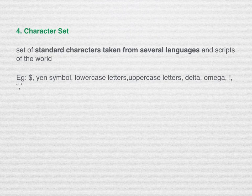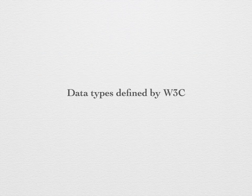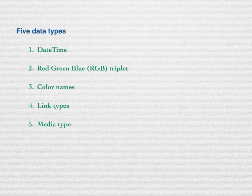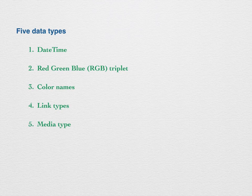These are the data types defined by RFC and IANA. Next are the data types defined by the W3C — the World Wide Web Consortium. There are five basic data types: datetime, RGB triplet, color names, link types, and media types.